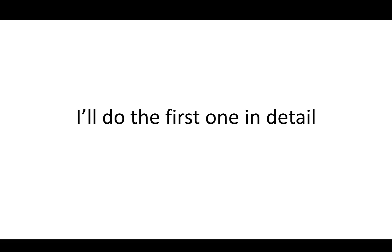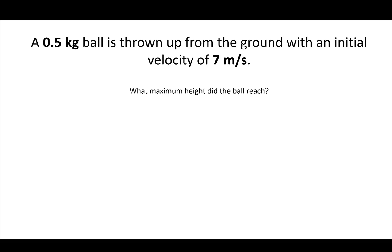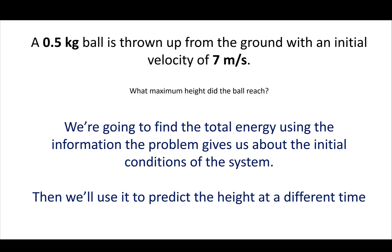I'll do the first one in detail. Say you have a half-kilogram ball thrown up from the ground with an initial velocity of seven meters per second. What is the maximum height the ball reaches? This is possible to do with kinematic equations, but I want to show you how to do it with energy. We're going to find the total energy using the information the problem gives us about the initial conditions — when the ball is just leaving your hand — and use that to predict the height at a different time.